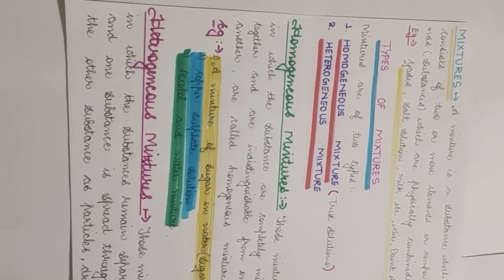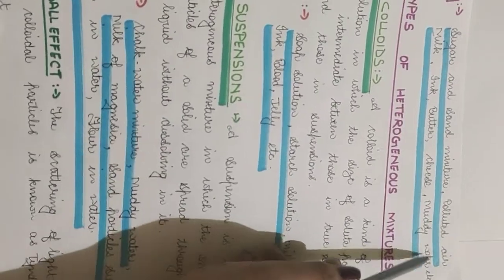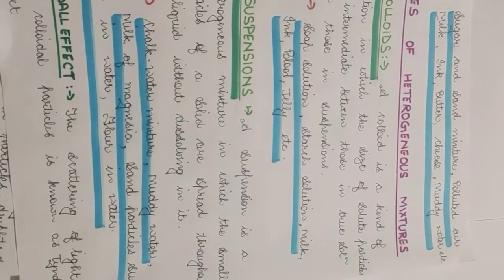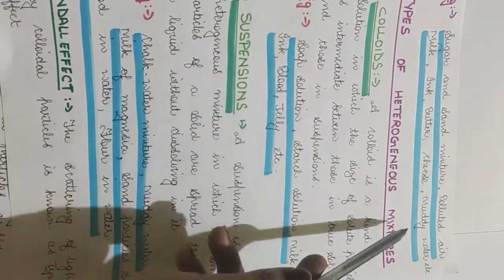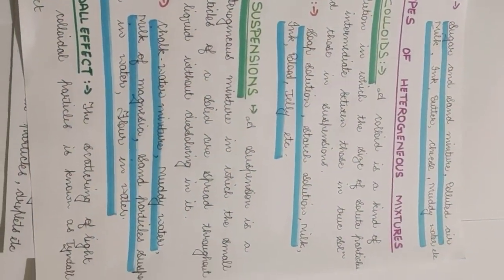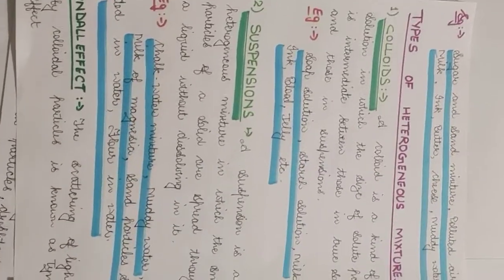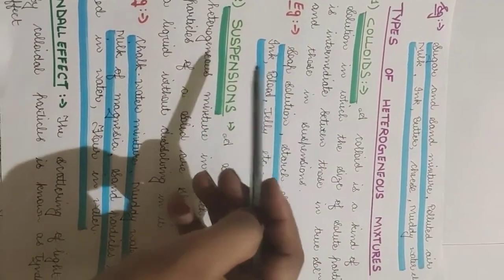Examples of heterogeneous mixtures include sugar and sand mixture, polluted air which has some suspended particles in it, milk, ink, butter, cheese, muddy water, etc. Milk has some particles of fat in it and other things also, so it is a heterogeneous mixture. Heterogeneous mixtures are again of two types: colloids and suspensions.